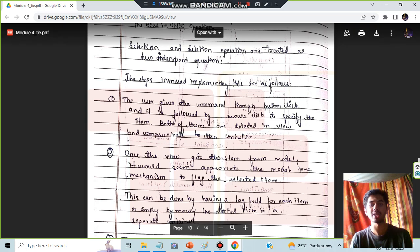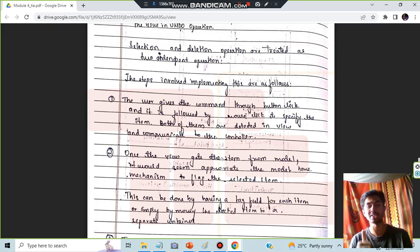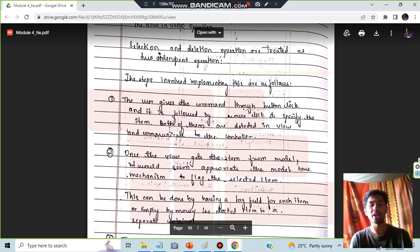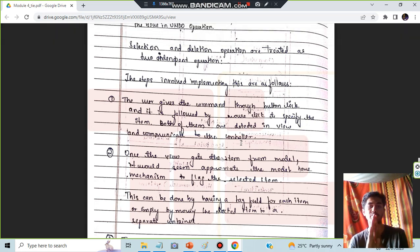First it is the button click, then it is the mouse command to specify what is the item. Then both of them are detected in the view and communicated to the controller. First the view detects it, then it communicates to the controller. When the controller gives some agreement, then the changes will be made in the model.